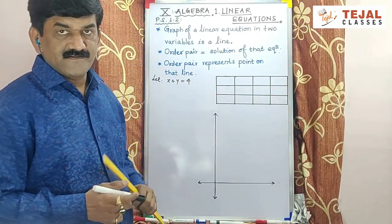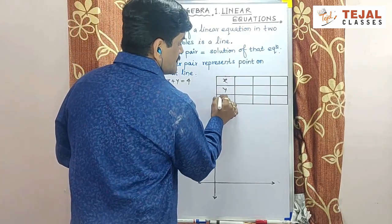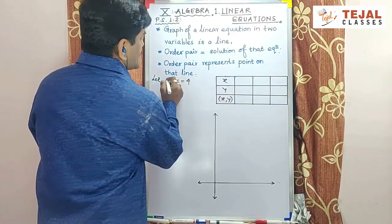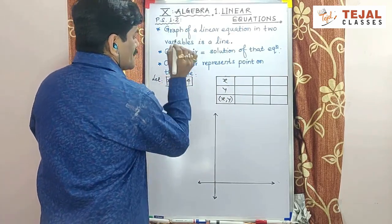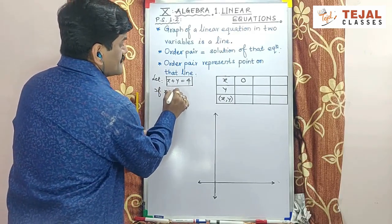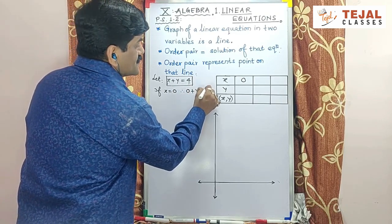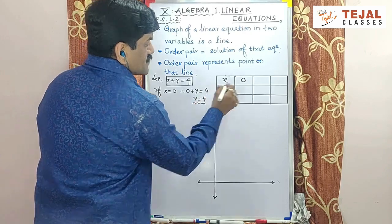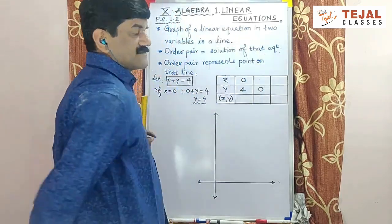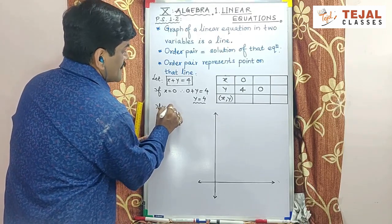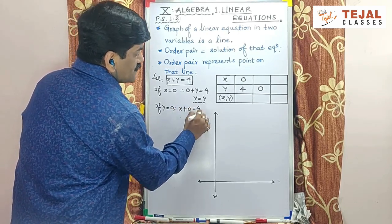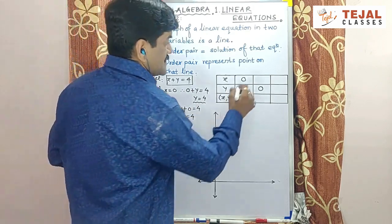सबसे पहले हमें एक table बनाना है, जिसमें x और y की columns होंगी. Minimum three points की जरूरत है. First, take x का value 0. अगर x की value 0 है, तो 0 plus y equal to 4, याने y का value 4. तो यहां पर 4 लिख सकता हूँ. Second, y का value 0 लेते हैं. अगर y की value 0 है, तो x plus 0 equal to 4, तो x की value 4 आ गई. यहां पर 4 लिख सकता हूँ.